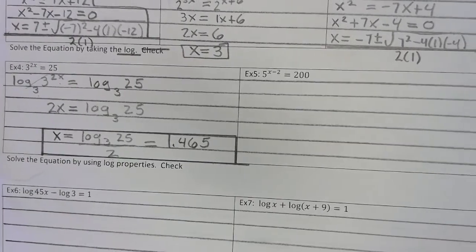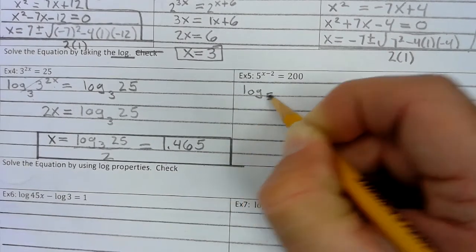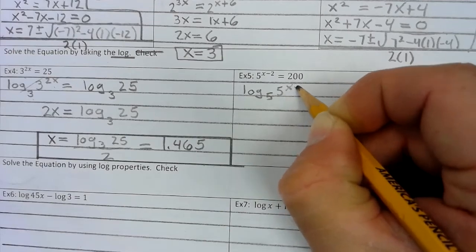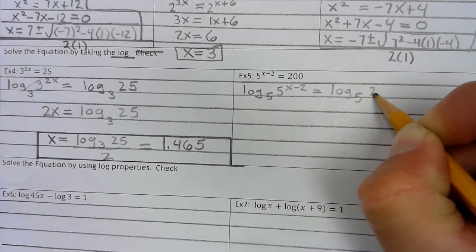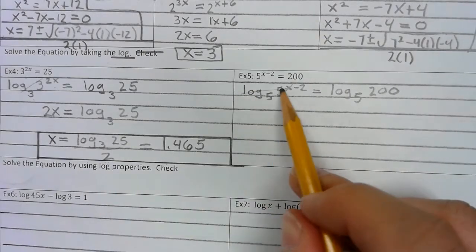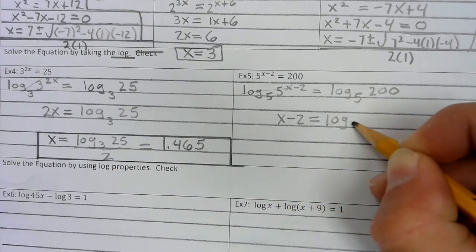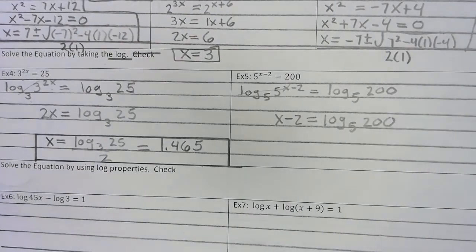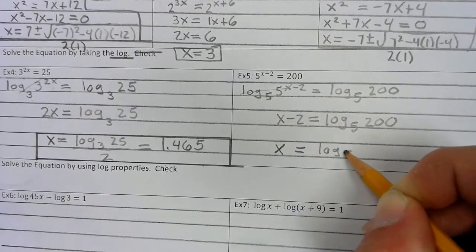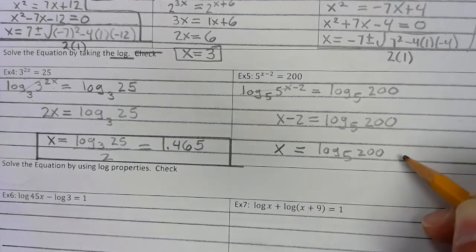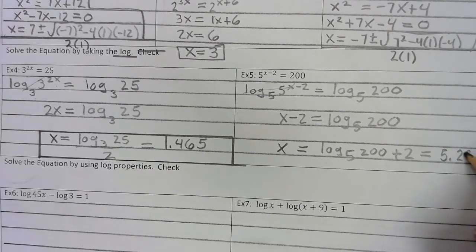Now let's take a look at Example 5. The base is 5, so we're going to do log base 5 of both sides. What you do to one side you have to do to the other. This becomes 1, so then you're left with x minus 2 equals log base 5 of 200. Our last step is we add 2 to both sides: x equals log base 5 of 200 plus 2, which equals approximately 5.292.